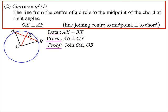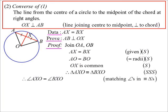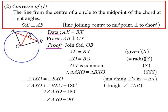I'll join AO and BO like before, but this time it's side-side-side: AX equals BX (given), equal radii, and OX is common. So by congruent triangles, the angles at X are equal. Since they add to 180 degrees on a straight line, they must both be 90 degrees.